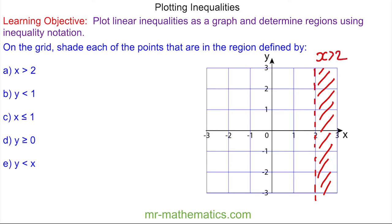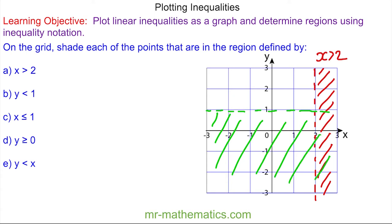And for question b, y is less than 1. Well here it's the point where y is 1 anywhere along this line. And because it is less than 1 we're going vertically downwards. And it cannot be equal to, so it is a dashed line which we can shade in here. We can check this works by picking any value in this region — here for instance you can see y is negative 2, and negative 2 is less than 1. So anywhere in this green region this is true.